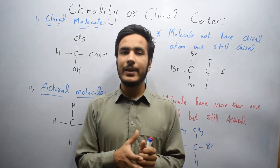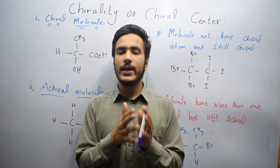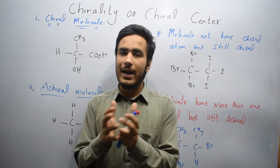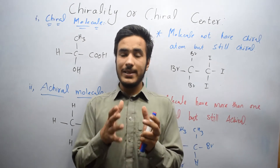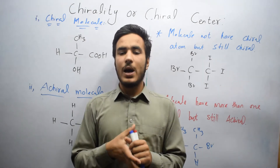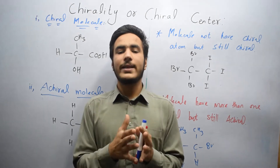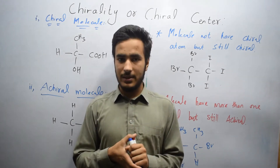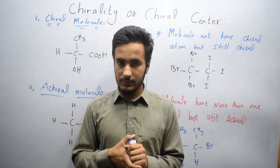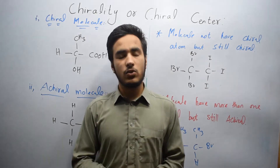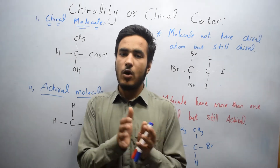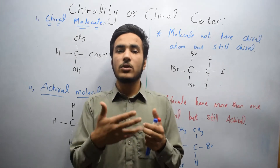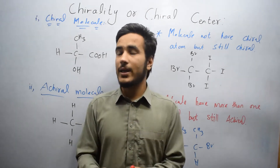A chiral atom is an atom in a molecule which has four groups or atoms attached to it. For example, a carbon atom bonded to four different groups is known as a chiral carbon atom or asymmetric carbon atom. The groups attached may be the same or different, symmetric or asymmetric, giving rise to the property known as chirality.